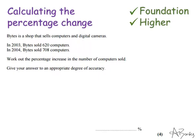Hello and thank you for watching my online lesson on calculating the percentage change. These questions give you a starting amount and an ending amount and ask you to work out the percentage increase or decrease. This question says Bytes is a shop that sells computers and digital cameras. In 2003, Bytes sold 620 computers. In 2004, Bytes sold 708 computers. Work out the percentage increase in the number of computers sold.